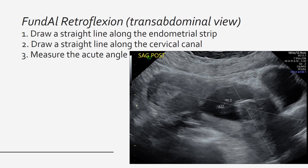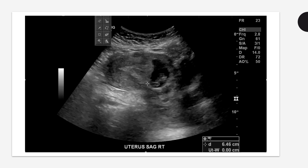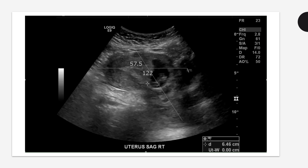The third marker is the presence of an acute far angle, or the fundal retroflexion angle. This is obtained on the transabdominal view, zoomed out with the fundus and the cervix in the same frame. First, draw a straight line along the endometrial stripe. Second, draw a straight line along the cervical canal. Then measure the acute angle that is created. In this scan of a cesarean scar ectopic pregnancy, the acute angle is 48 degrees. This is a cine clip showing the far angle being measured post-production on our PAC system using the angle measure function. In this scan, the acute angle is 57.5 degrees.